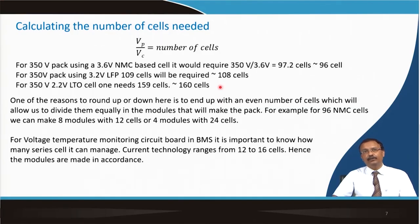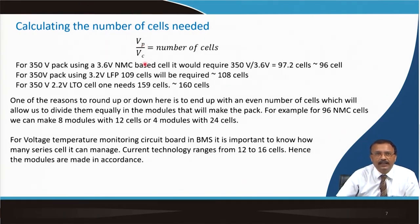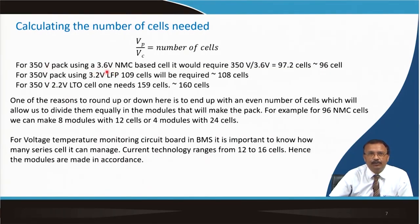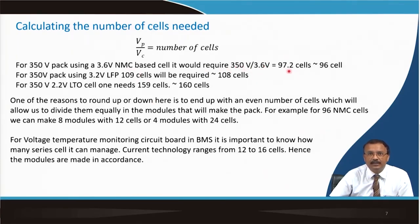It is important to calculate the number of cells needed. If Vp is the pack voltage and Vc is the individual cell voltage, then dividing Vp by Vc gives the number of cells. For a 350-volt pack using a 3.6-volt NMC cell (one-third nickel, one-third manganese, one-third cobalt layered structure with graphite as negative electrode), you need 350 ÷ 3.6 ≈ 97.2 cells. Since you can't break a cell, take the nearest even number: 96.